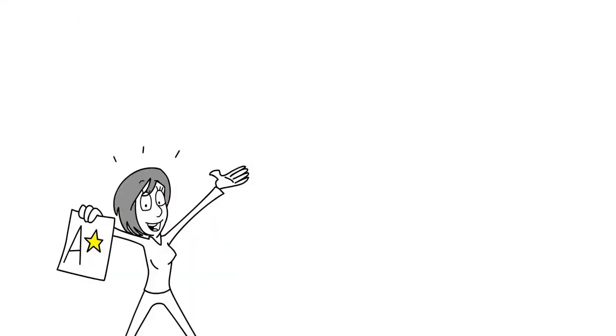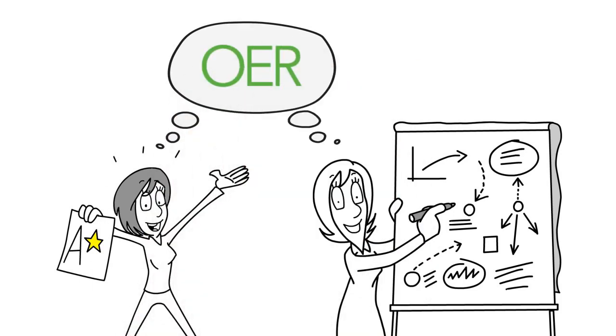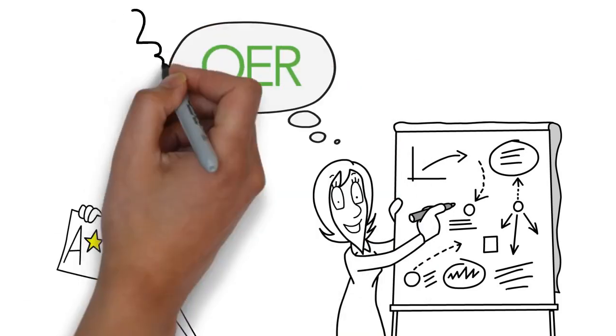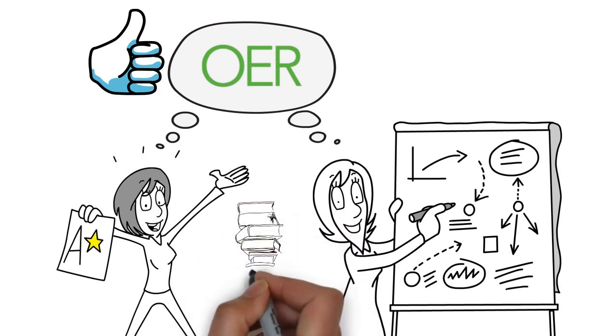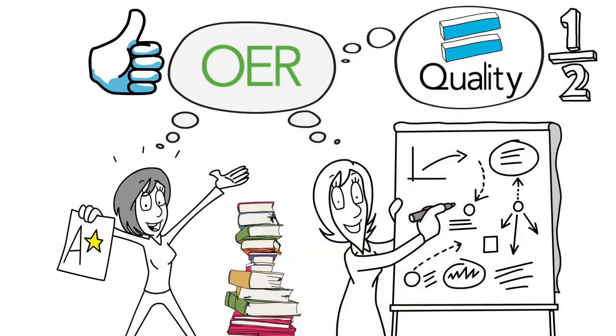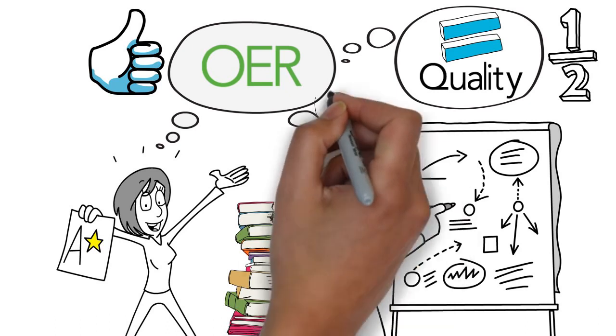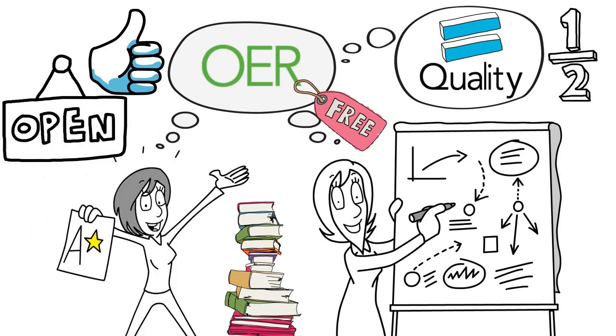The studies that looked at student and professor perceptions of OER revealed that the majority of students and professors viewed open educational resources positively. A sizable majority felt that OER were of better quality than traditional textbooks. About half said that they were of similar quality, and only a few thought that OER were inferior. Students liked OER because they were free. Professors liked the open content and up-to-date material.